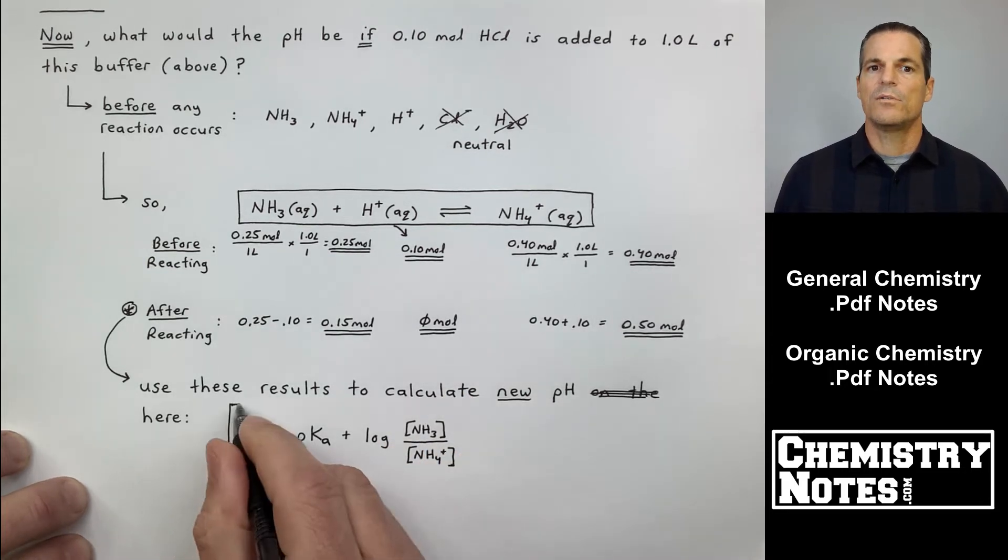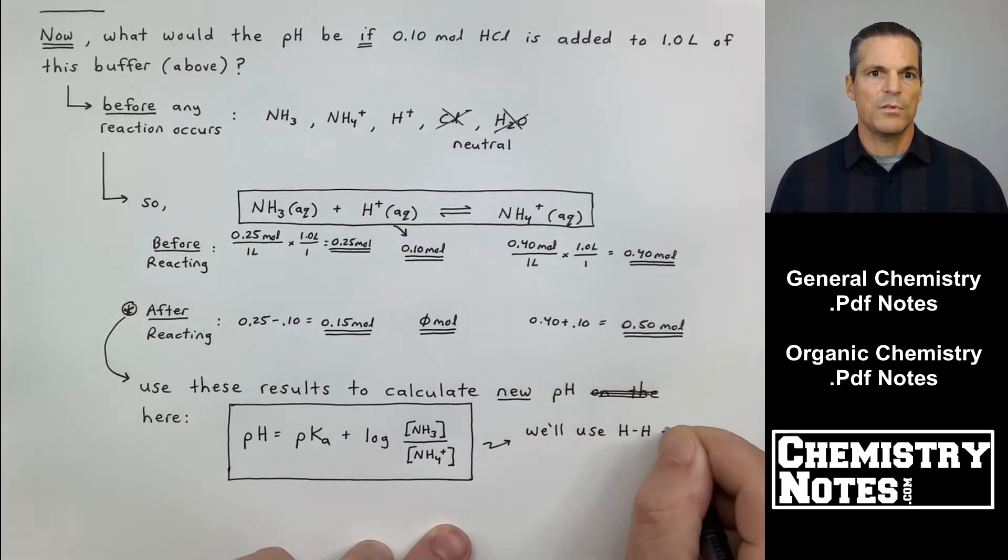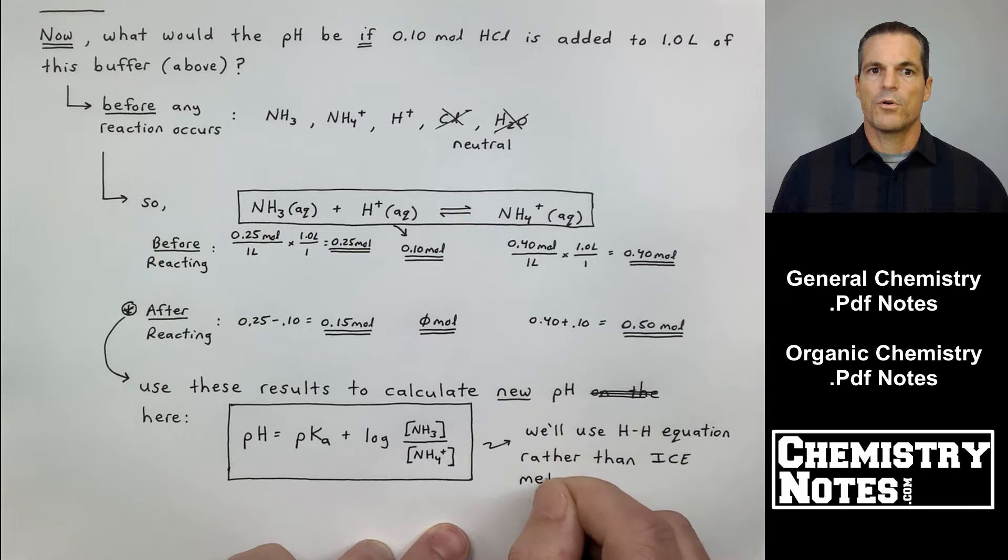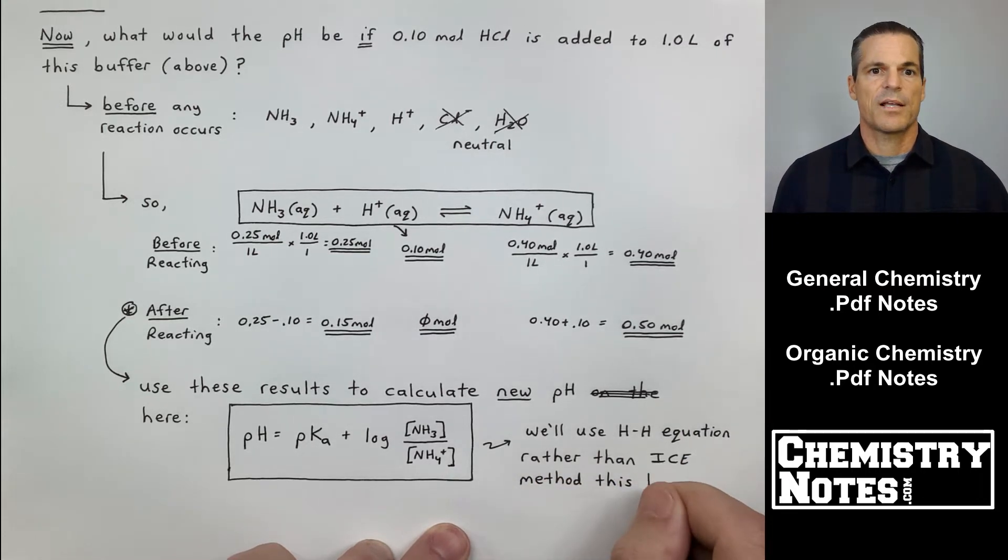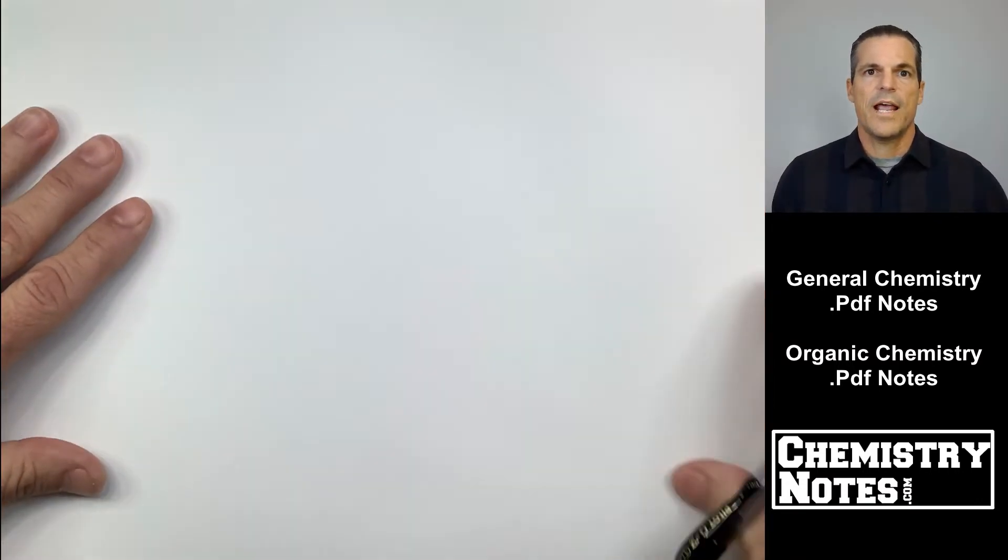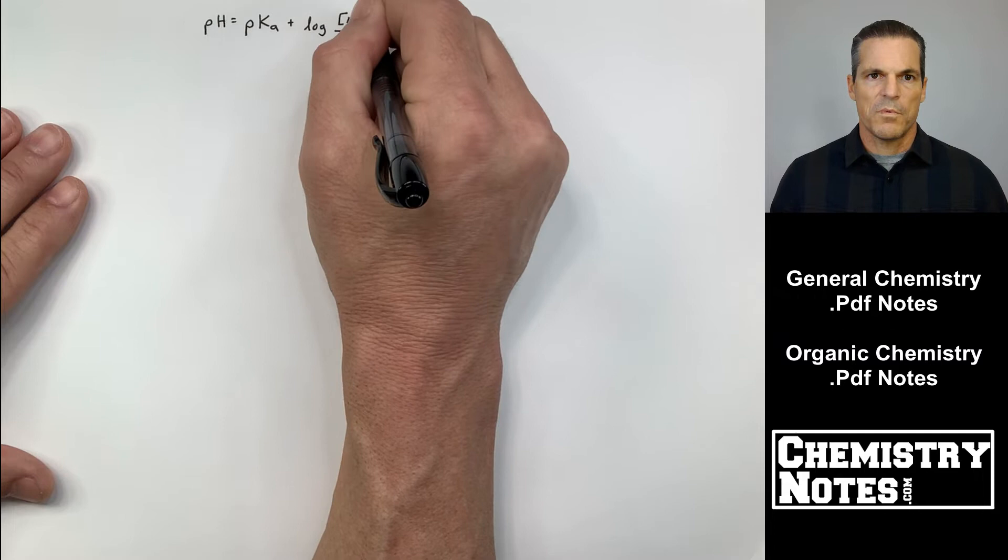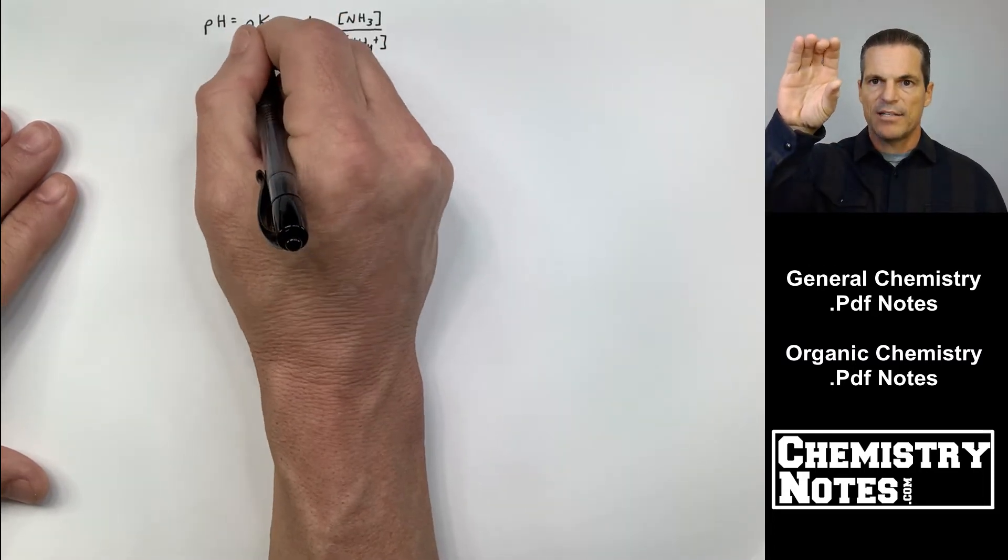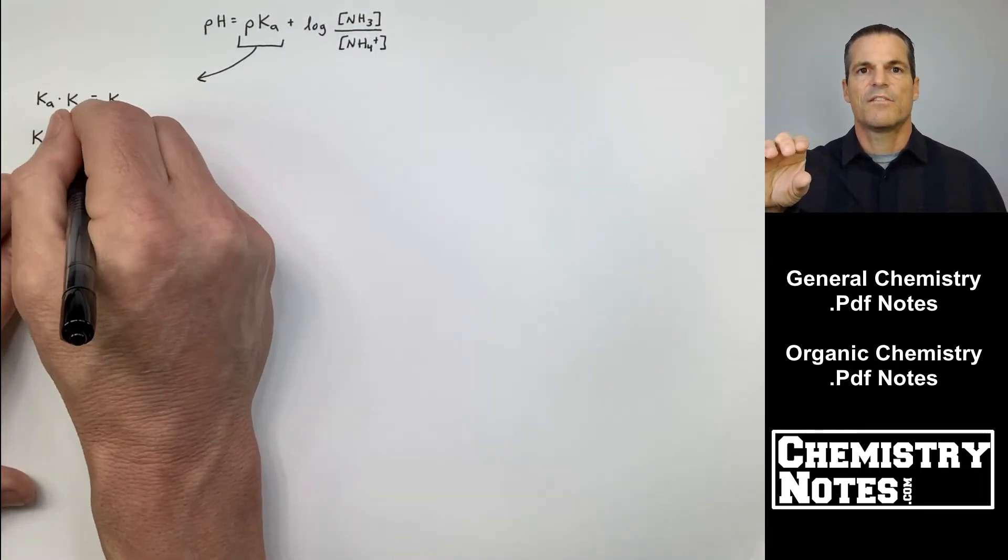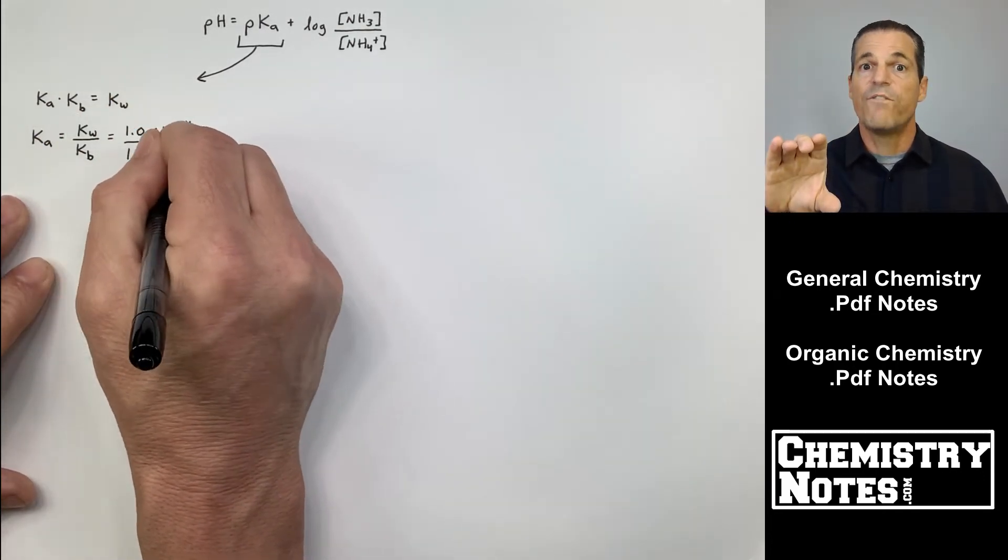We use these results and we could use those results as our initial concentrations in an ICE table or 0.15 mole would become 0.15 molar, and then we'd have 0.50 molar for NH4 plus. But if we just go ahead and use the Henderson-Hasselbalch here, pH is equal to pKa plus the log of NH3 all over NH4 plus concentration. Now, why did I do that? In the general form of the Henderson-Hasselbalch equation, it's A minus over HA. So the difference between numerator and denominator is the fact that the bottom one has one additional H. That's why it's NH3 and NH4 plus.